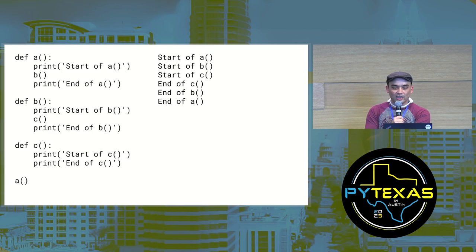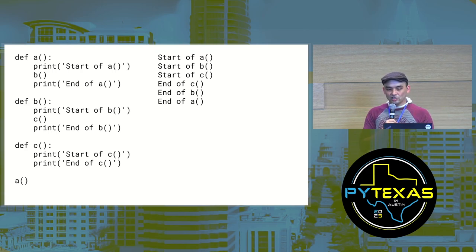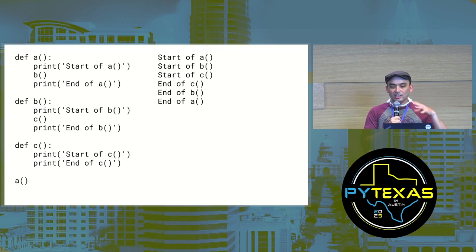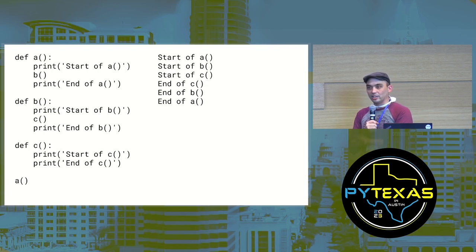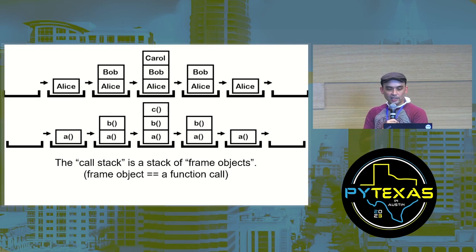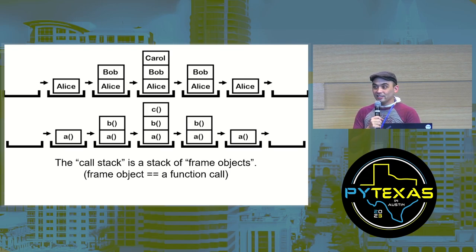The second thing you need to know about are function calls. When you call a function, you're not just going on a one-way trip into that function — the Python interpreter needs to remember where to return to when the function call returns. So if function A calls function B which calls function C, when C returns it goes back to B, which goes back to A, which goes back to the global scope.